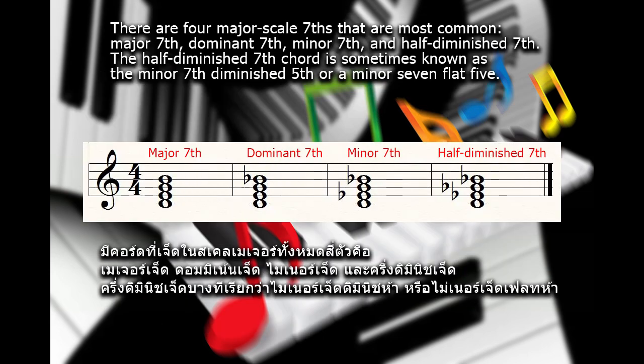There are four major scale sevenths that are most common: major seventh, dominant seventh, minor seventh, and half diminished seventh. The half diminished seventh chord is sometimes known as the minor seventh diminished fifth, or a minor seventh flat five.